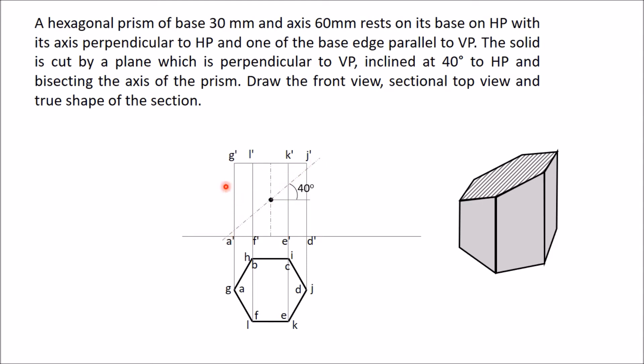Now this section plane is cutting these different edges - 1, 2, 3, 4, 5, 6 edges are there. So it is cutting these 6 edges at different points. Mark these points. First, 1 dash is the point where the section plane is cutting the edge AG. At 2 dash it is cutting LF. This edge is cut by the section plane at point 3 dash. Similarly, DJ at 4 dash. Now IC - CI edge is there, overlapping with EK. So it will appear at the same position, marked as 5 dash. And then 6 dash, which is the section of HB. In this way, you have marked all the points where this section plane is cutting all the 6 edges.